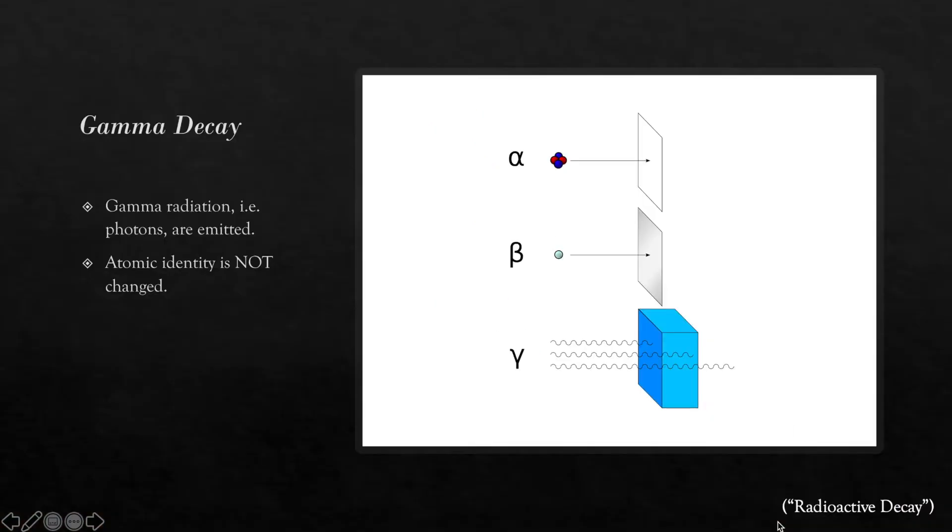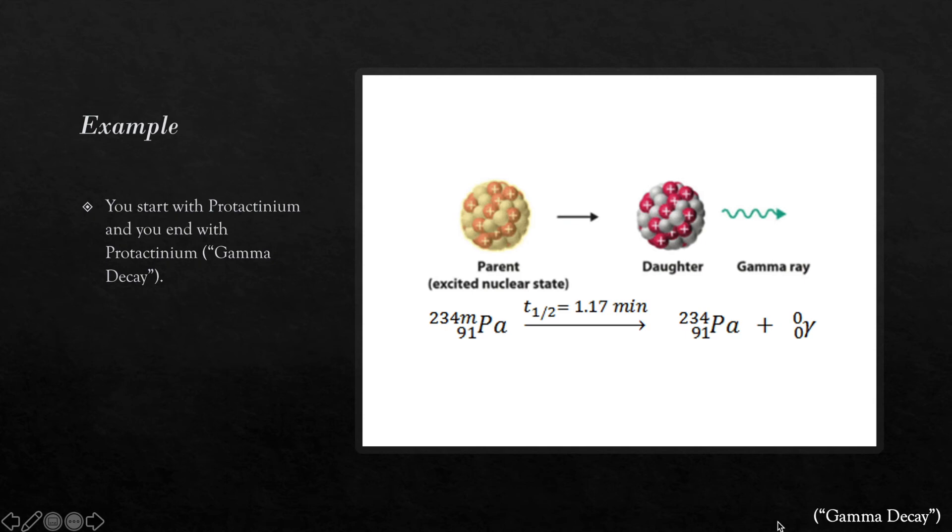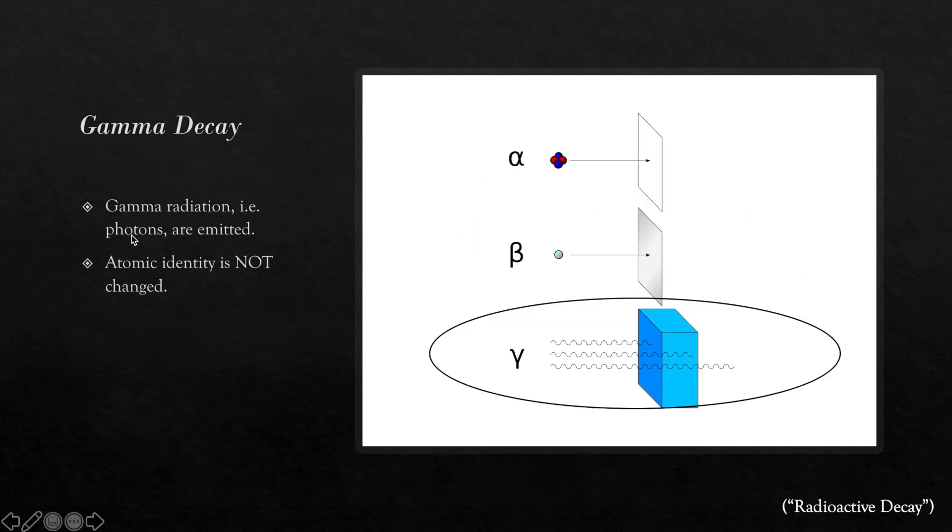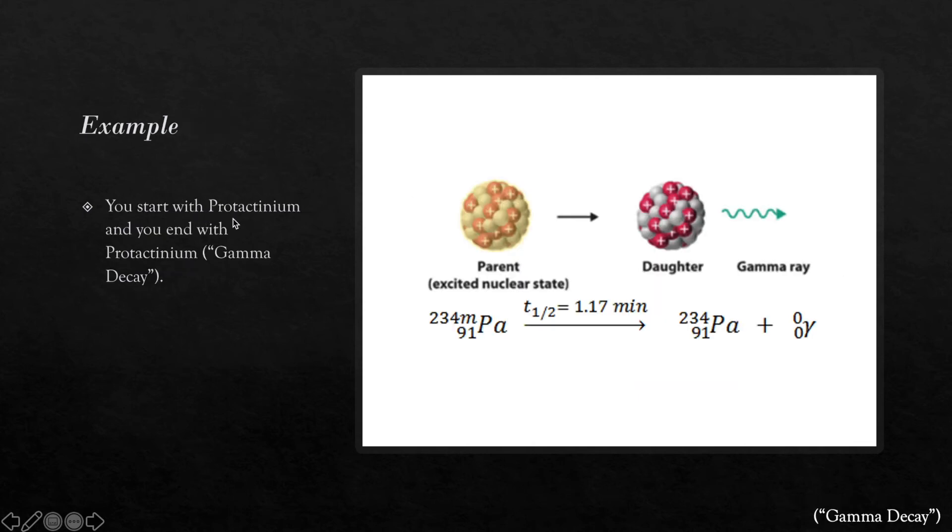The third type of radiation is gamma decay, which is the most dangerous of the three, with the ability to penetrate several centimeters of lead or even meters of concrete. Gamma rays are part of the electromagnetic spectrum, and therefore are made up of photons. An unstable atomic nucleus might go from a higher energy state to a lower energy state, emitting a high-energy photon in the process. However, unlike the other two forms of decay, this form of radioactive decay does not result in the change of element. Therefore, in this example, you start with protactinium and you end with protactinium. The parent and daughter elements are both the same.